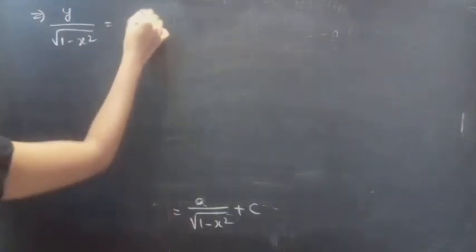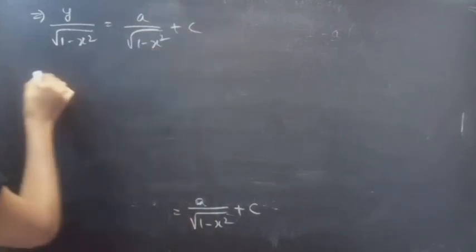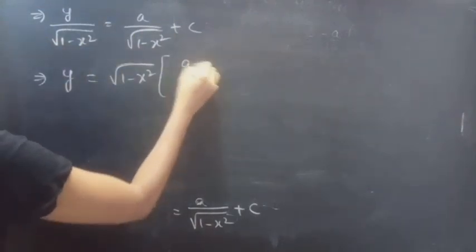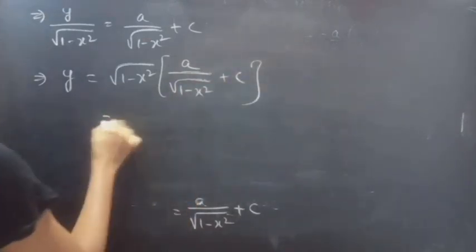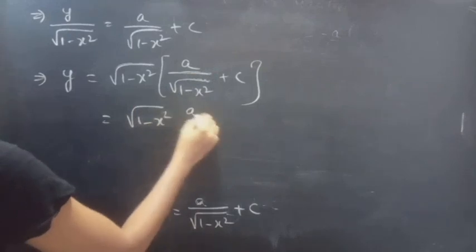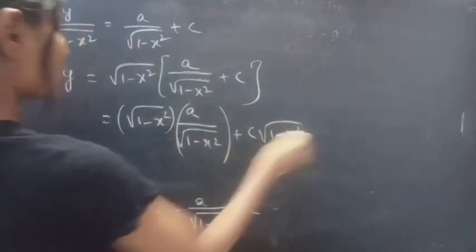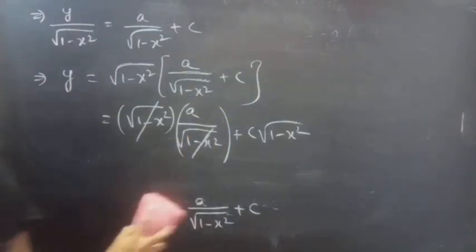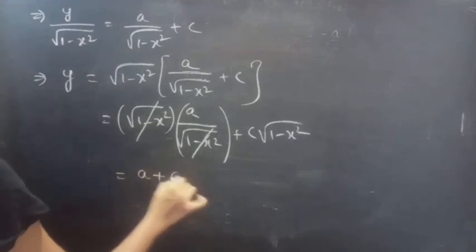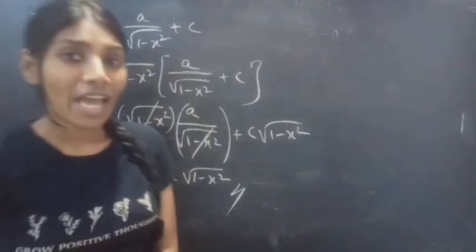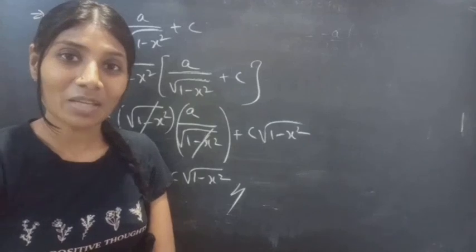Therefore y/√(1 minus x squared) equals A/√(1 minus x squared) plus c. Multiplying both sides by √(1 minus x squared), the √(1 minus x squared) in the first term on the right cancels, giving y equals A plus c·√(1 minus x squared), which is the required general solution. So we have solved a problem from linear equations in this video. Hope you understand. We'll see you in the next video — until then, bye.